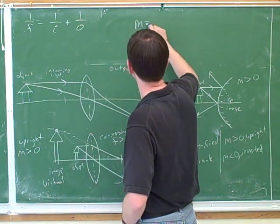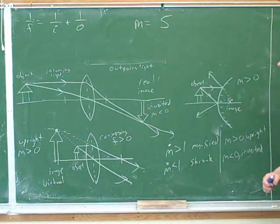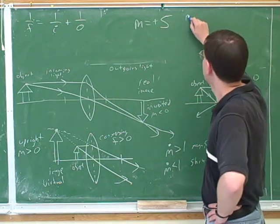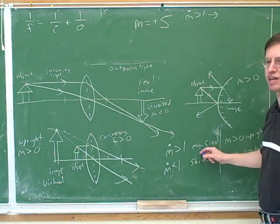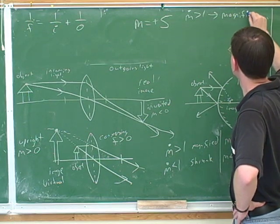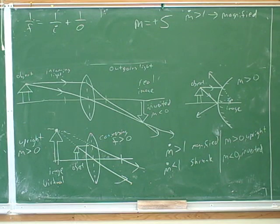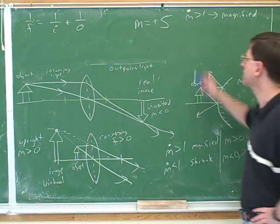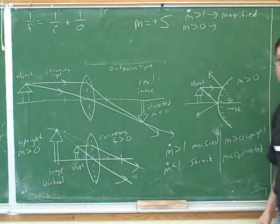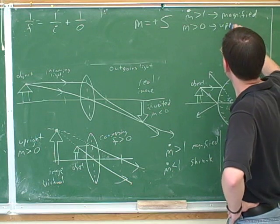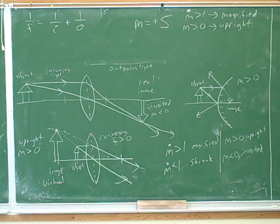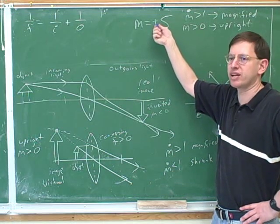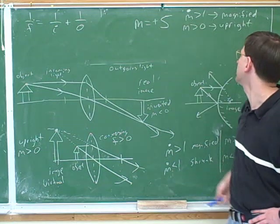For example, what does it mean if m is positive five? First, look at the magnitude — it's bigger than one, which tells me this is a magnified image. Then focus on the sign: m is positive, and a positive m means an upright image. So this one number encodes two pieces of information: the positive sign tells us upright, and the magnitude greater than one tells us magnified.